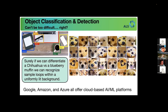Surely, if we can differentiate a chihuahua from a blueberry muffin, we should be able to recognize a sample loop within a uniformly lit background. This actually looks like a really difficult image recognition problem, but Google has figured out how to do this. So we figured we ought to be able to figure out how to do it too. At this point I had no background in machine learning or artificial intelligence. I was casting around trying to figure out how to approach this problem. We played around with a tool from Nvidia called Nvidia DIGITS, but nothing worked for us — there was just too much stuff we didn't understand and too many knobs to turn that we didn't know what they did.